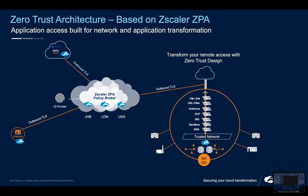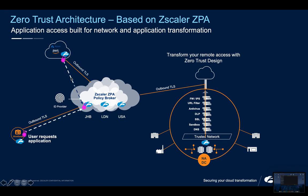The Zscaler app exposes those applications to your ZPA broker. When a user wants to request an application, they click on — for example — SAP. That application request goes to the broker. The broker determines whether that user has the authority to use SAP based on defined policies, and if yes, the user is sent to the closest application connector to stitch that connection together. Using the global load balancers within Zscaler's global network, it chooses the closest connector to the user. The connection is established on an application-by-application basis based on policy.